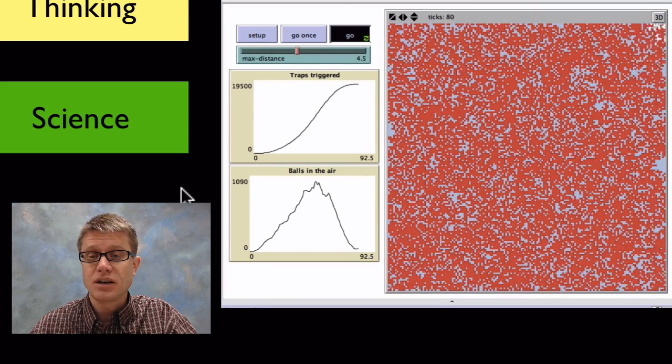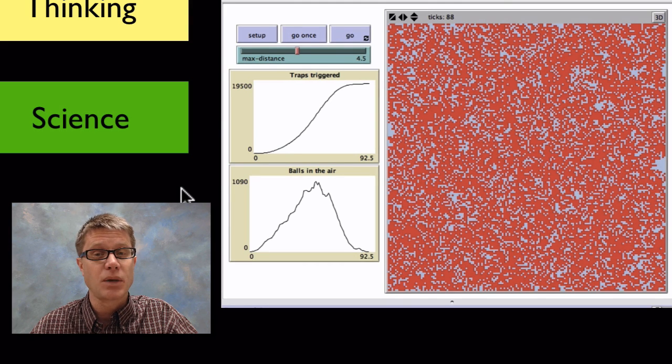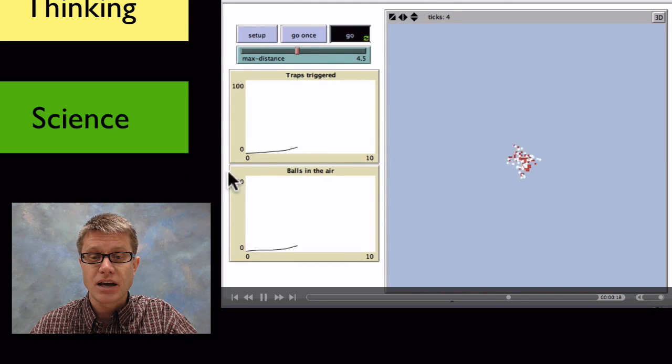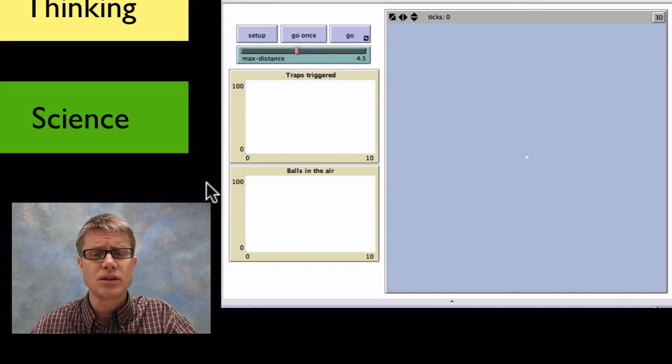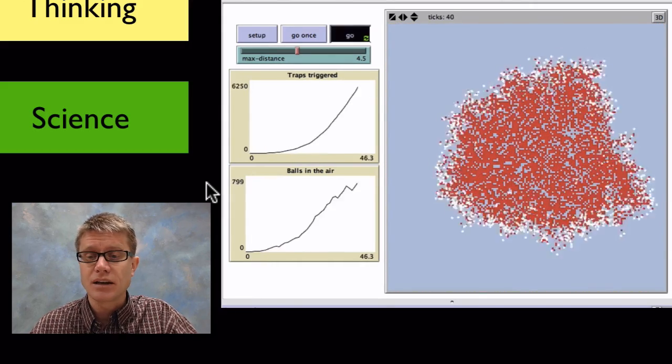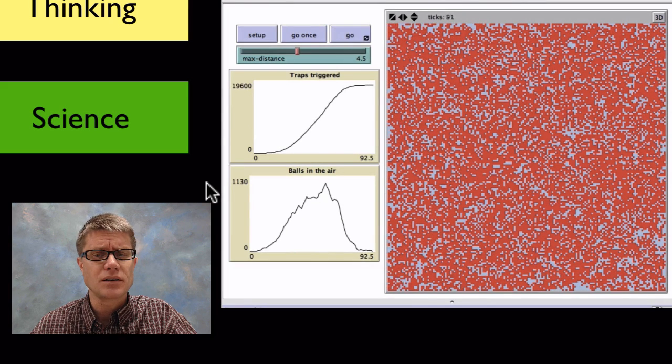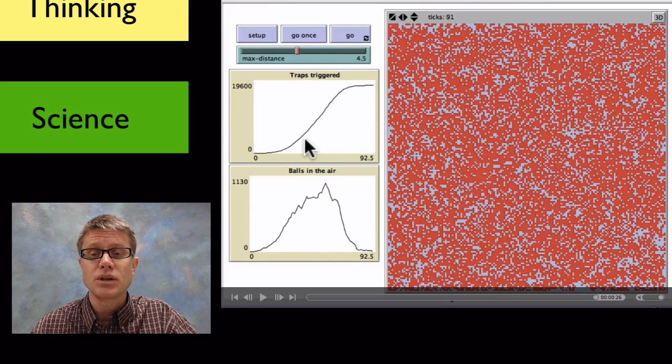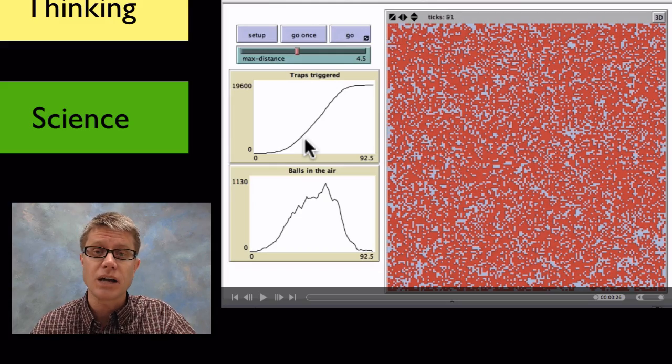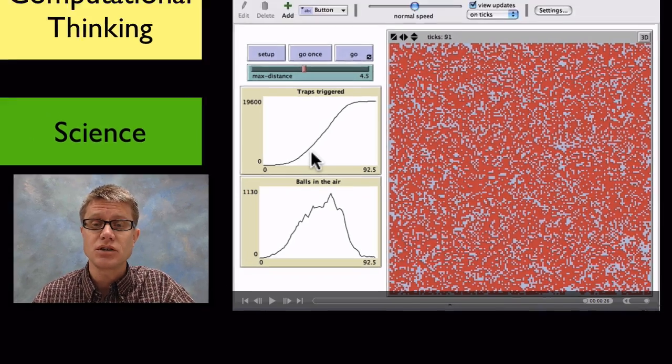And so you can see a quick simulation of this mouse trap problem. It gives us data over on the side and we can run it again. You'll find that it doesn't look exactly the same but it looks very similar. Or we can run it again and it doesn't look exactly the same but it has a similar behavior. And so we can get data from that. And so we can use computers to gather a huge amount of data and they allow us to make better decisions.